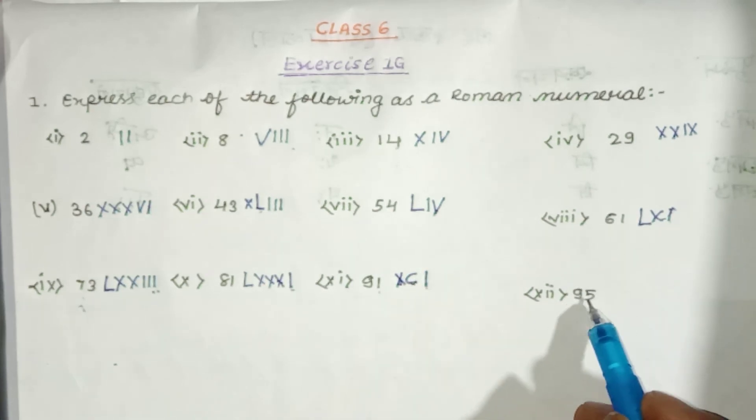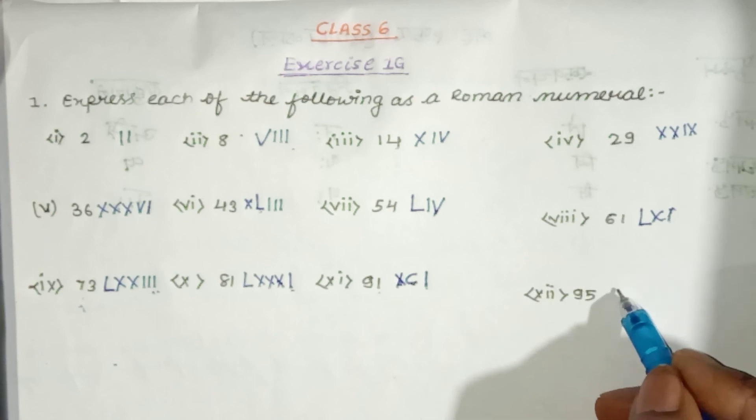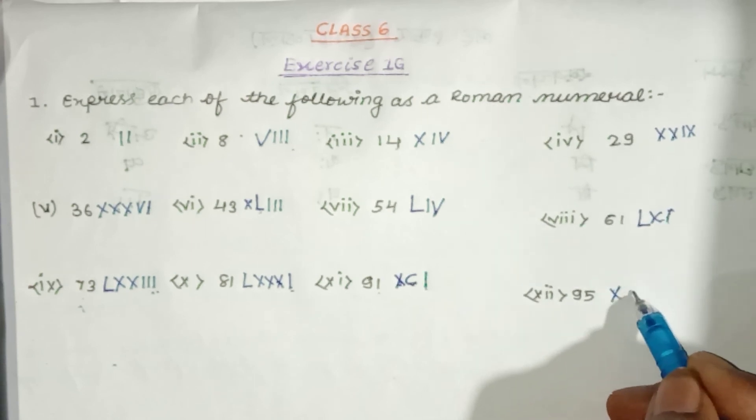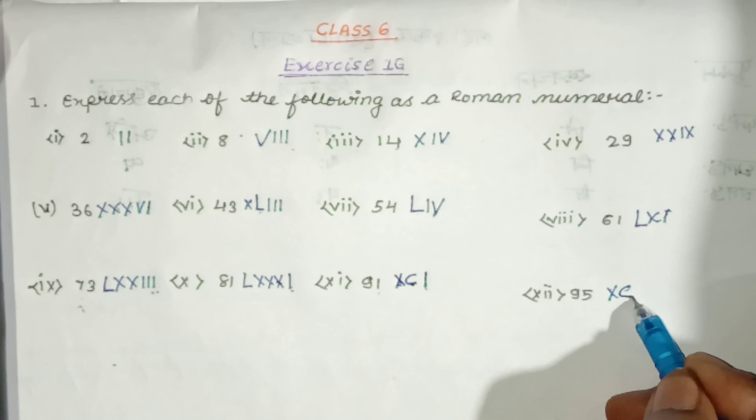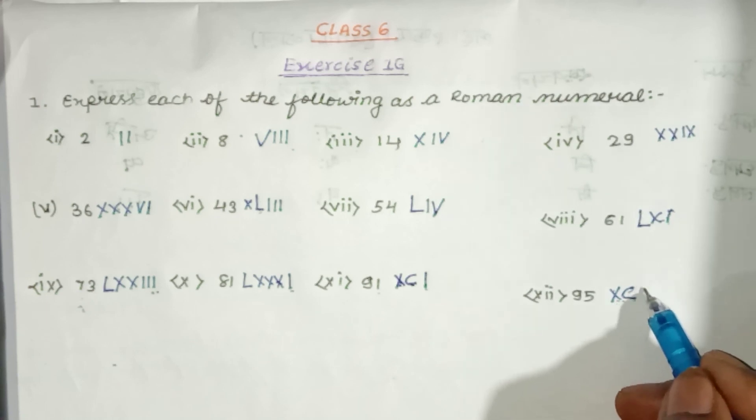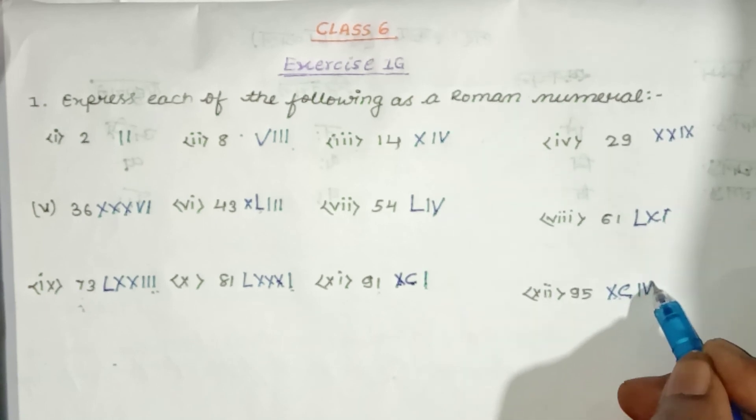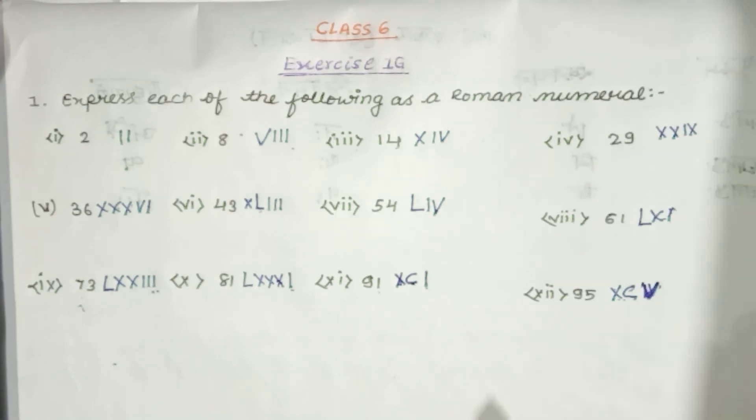Next is 95. We will add 100. 90 plus 5. This is our 95.